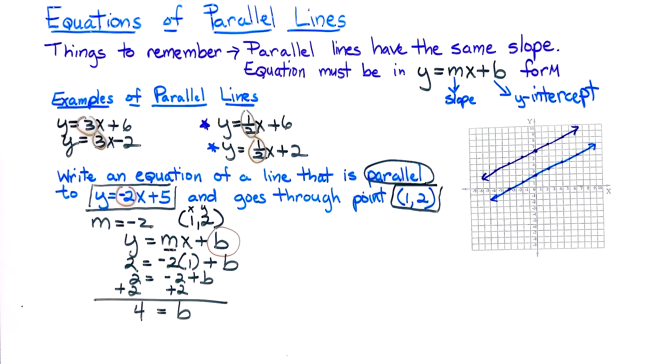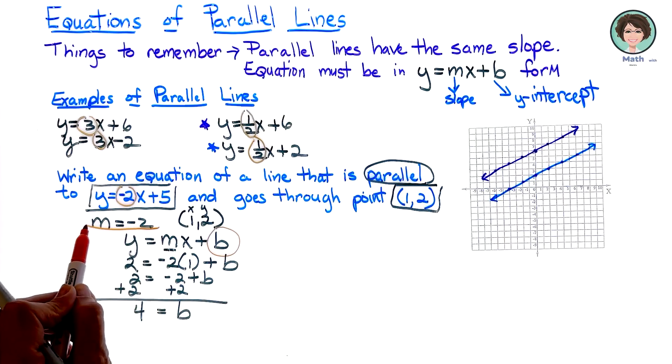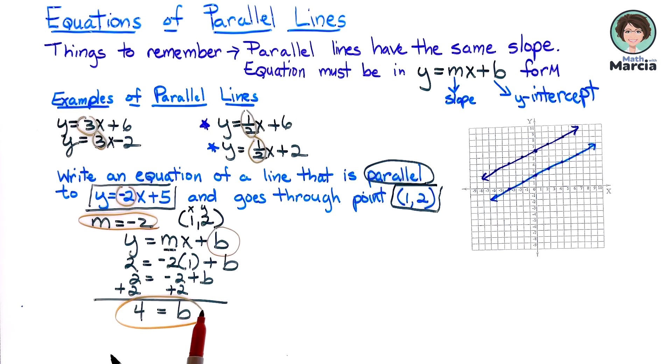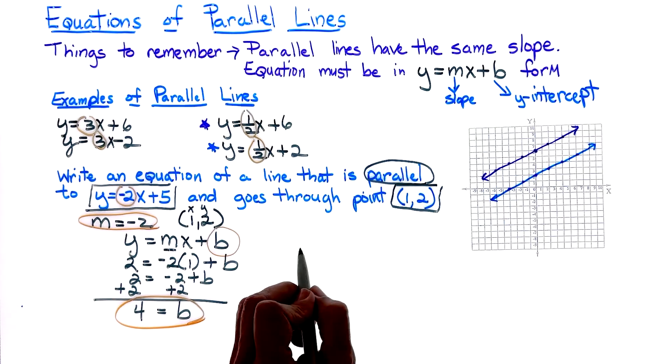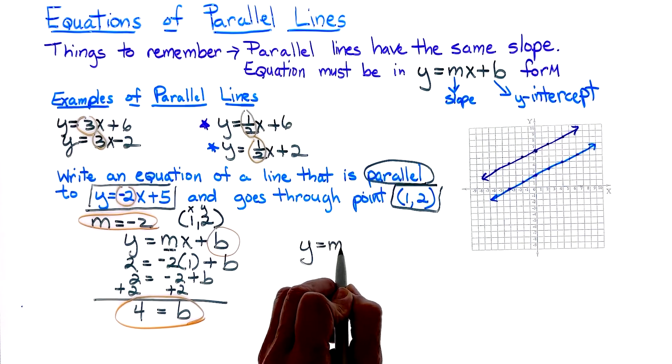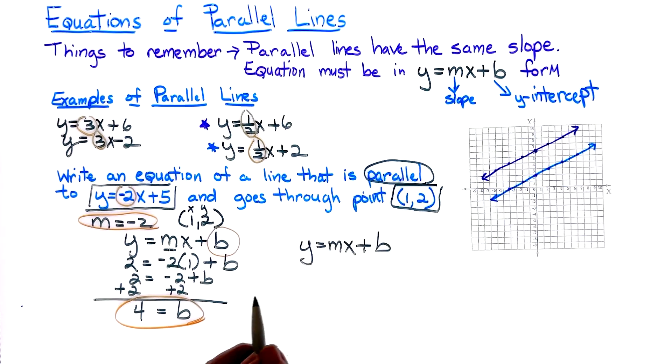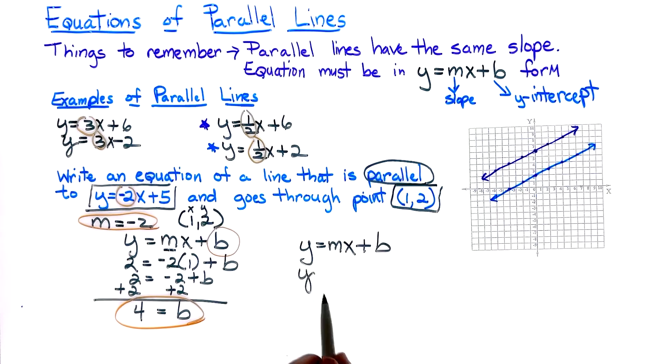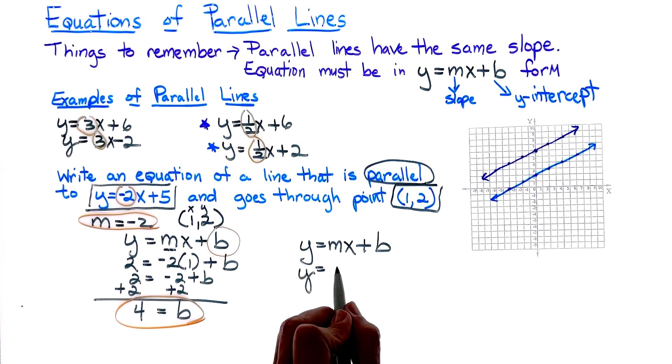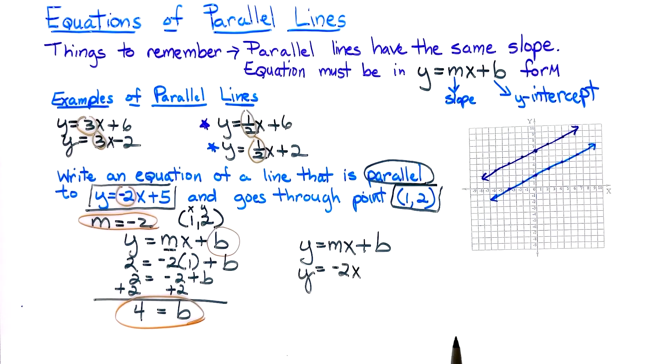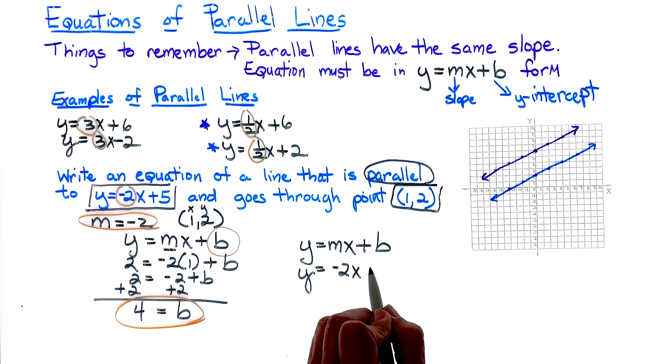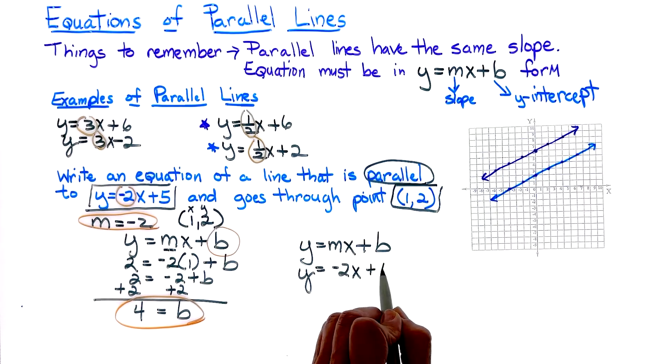Remember, b is our y-intercept. So now we do have our slope, we have our y-intercept, and we know when we have the equation y equals mx plus b, our y will always be there, our slope we have as a negative 2, and our x will always be there. And now since b is a 4, we are going to write plus 4.